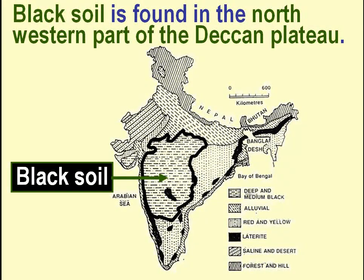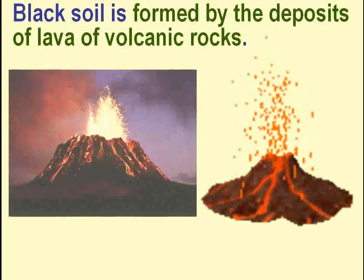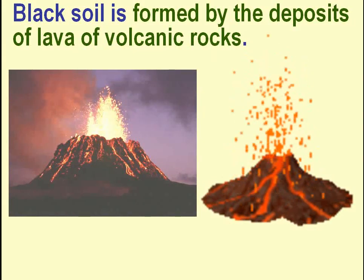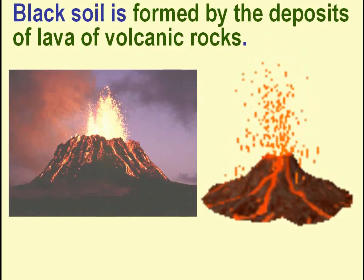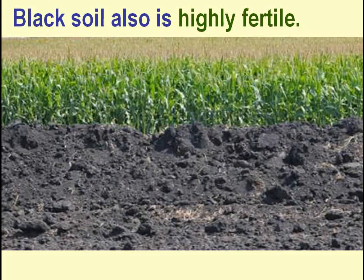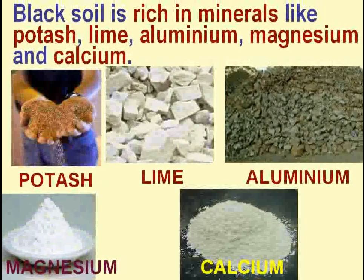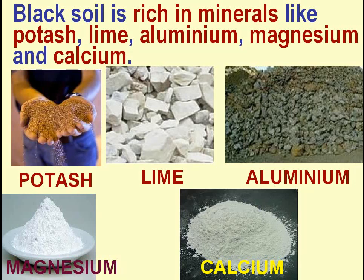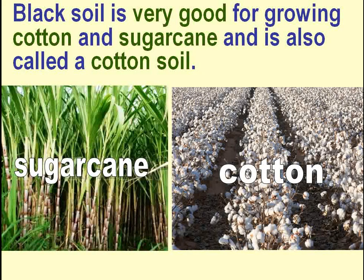Black soil is found in the north-western part of the Deccan plateau. It is formed by the deposits of lava of volcanic rocks. Black soil is sticky and retains moisture for a long time. It is also highly fertile and rich in minerals like potash, lime, aluminium, magnesium and calcium. Black soil is very good for growing cotton and sugar cane and is also called cotton soil.